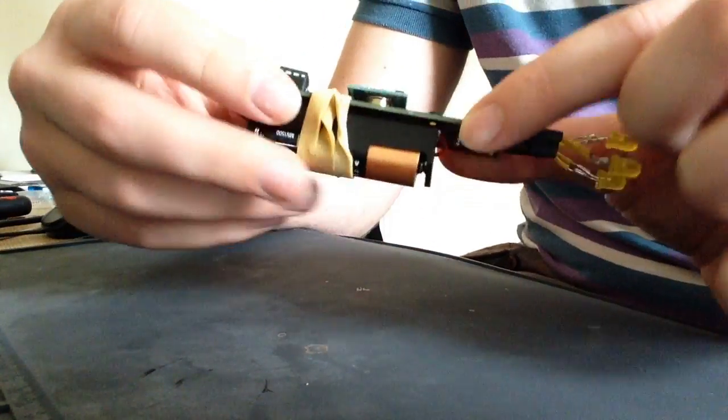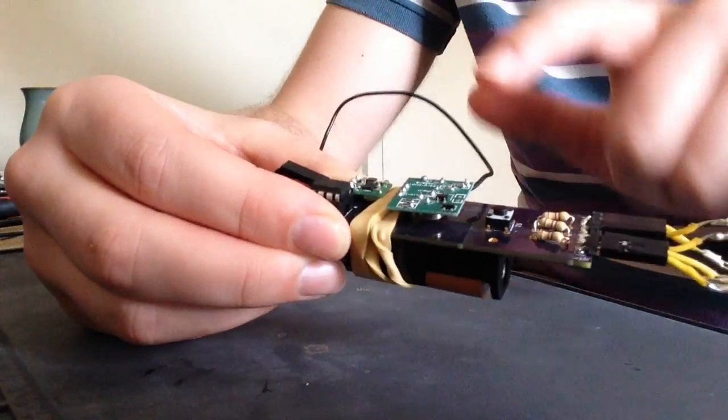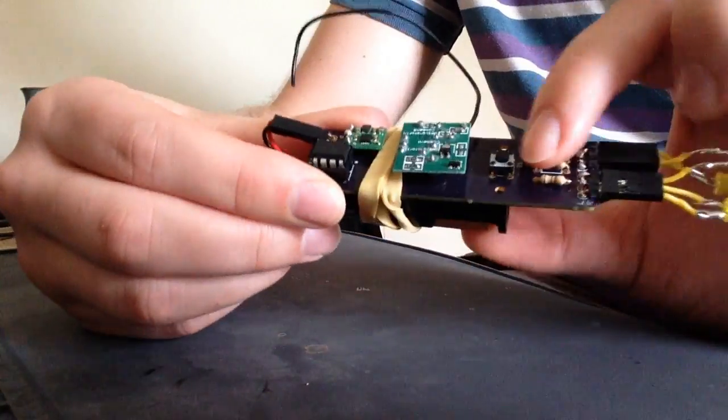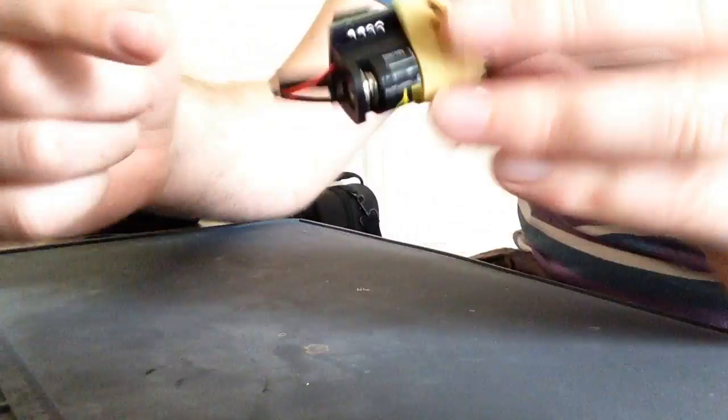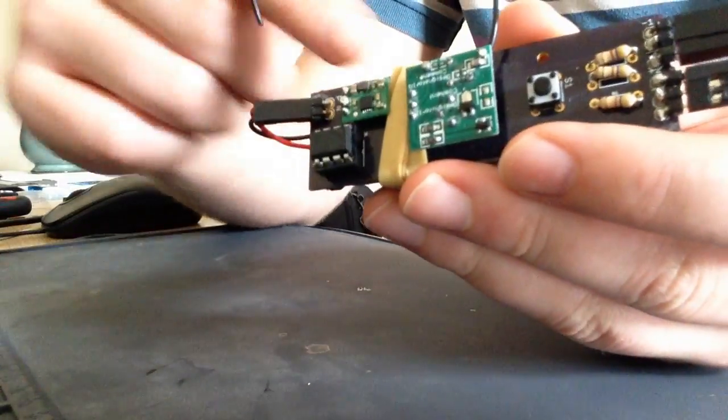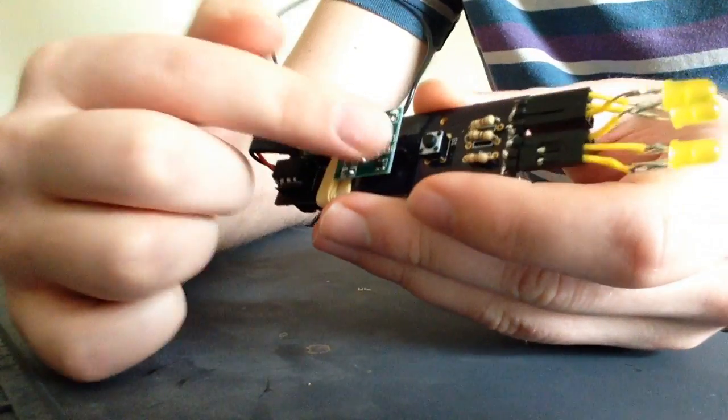One problem I did have is that the battery outputs 1.5 volts but the ATtiny and the radio module require 5 volts and that's where this little board comes in. What it does is it takes in the 1.5 volts from the AA battery and then steps it up to 5 volts which is required by the ATtiny and the radio module.